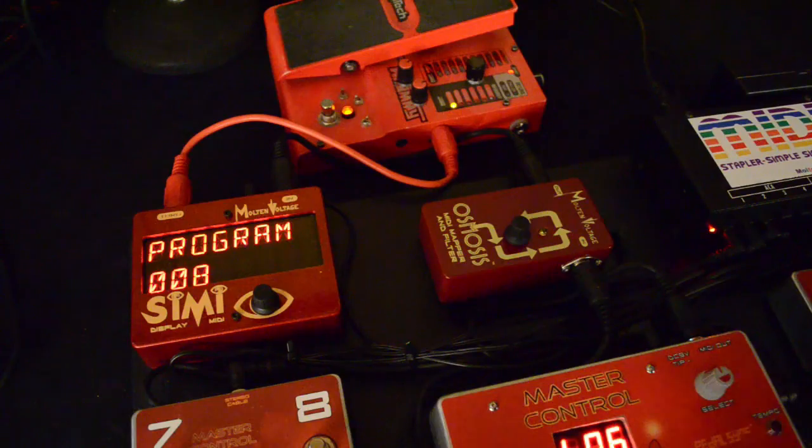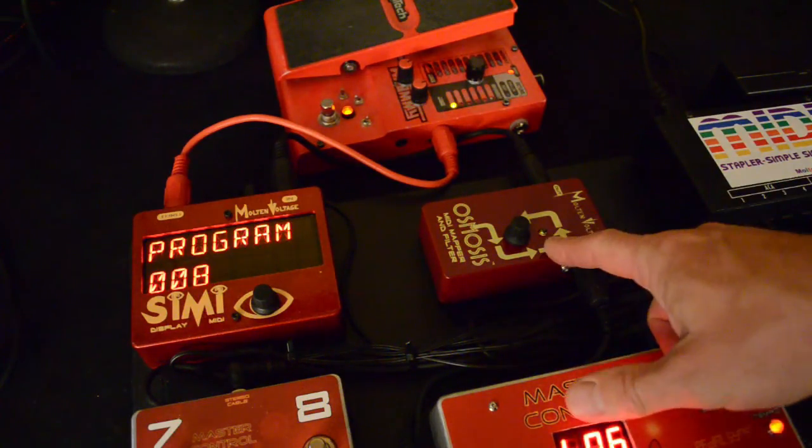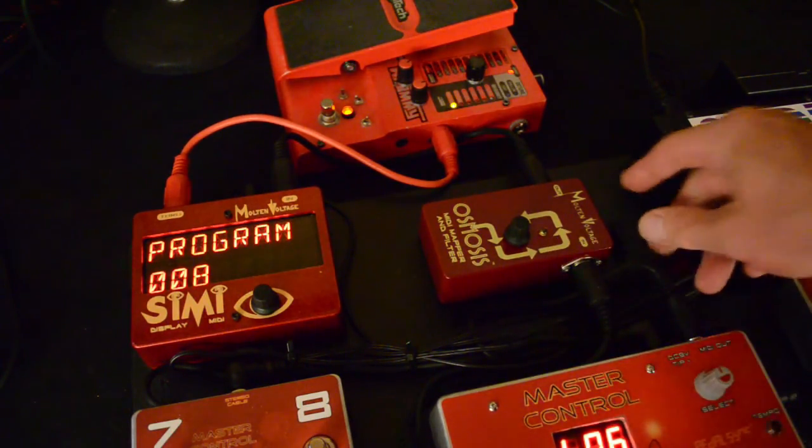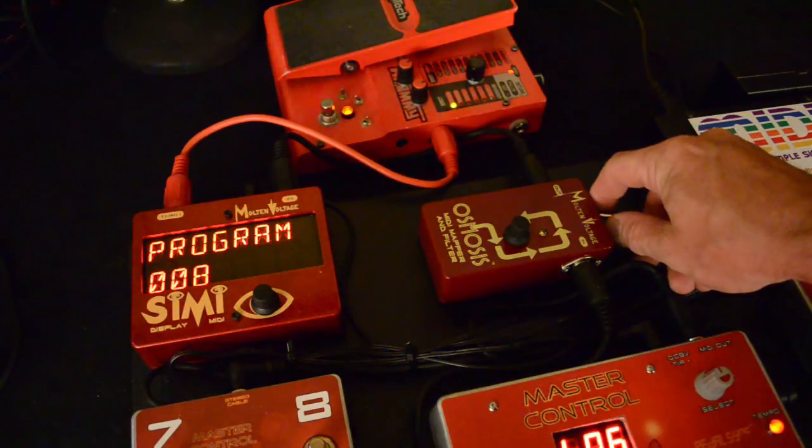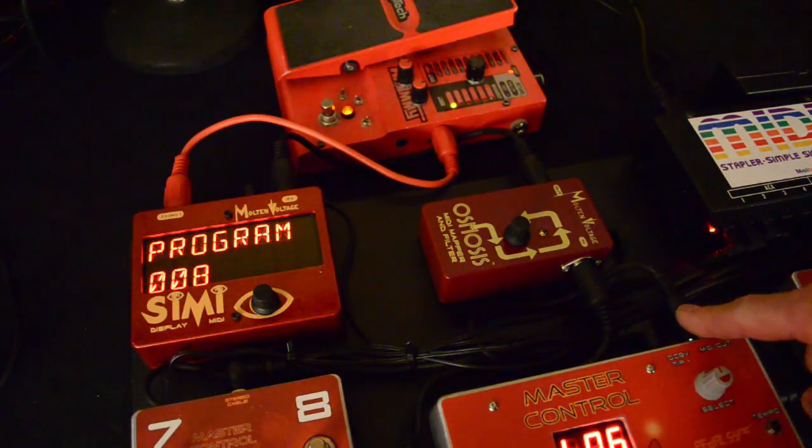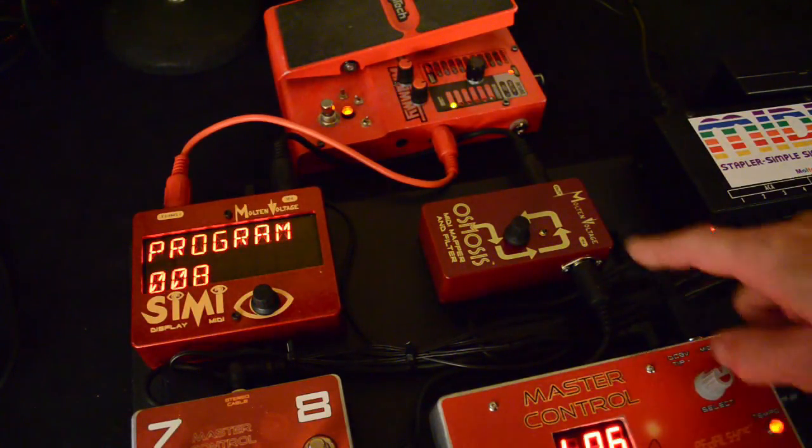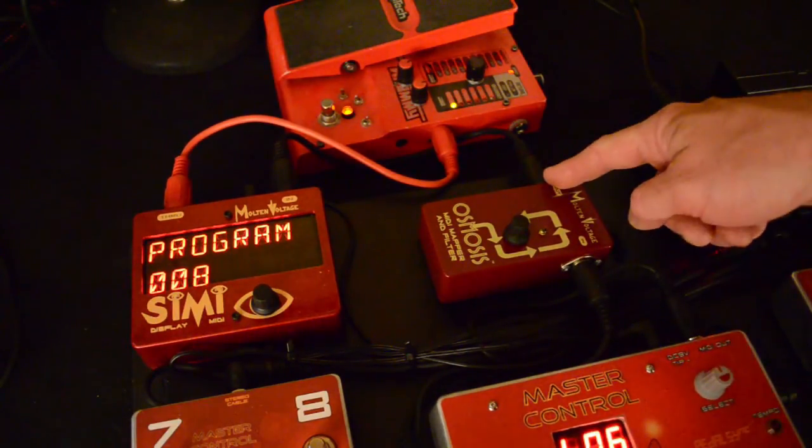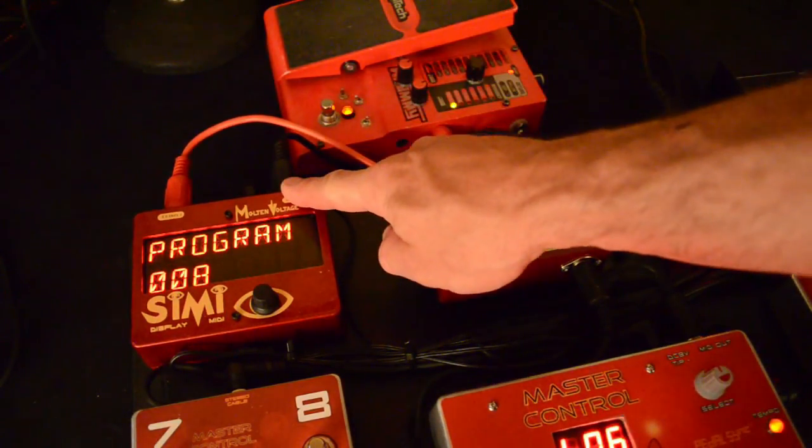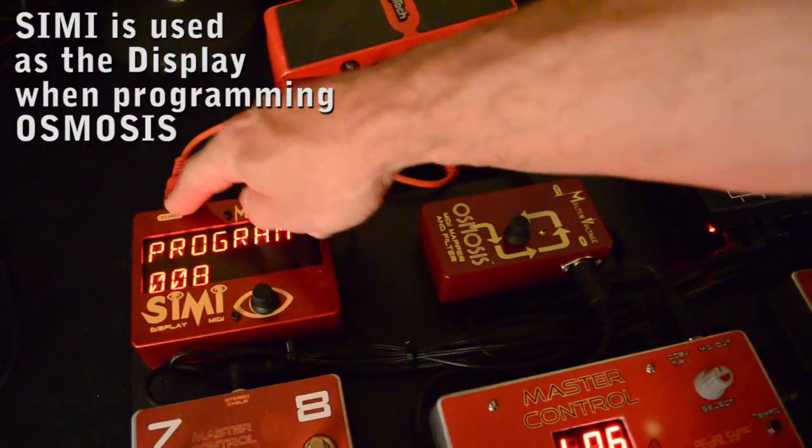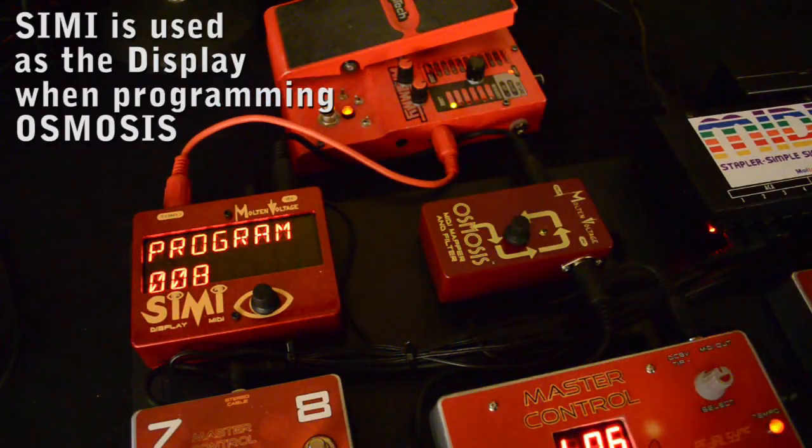Hi, this is Bill from Molten Voltage and today I'm going to show you how to set up Osmosis, our MIDI mapper and filter, and also what it can do. The first thing you're going to want to do is plug the output of your MIDI controller into the input of Osmosis. Then send the output of Osmosis over to CME, and then from CME you can connect the MIDI through there onto the rest of the MIDI devices.